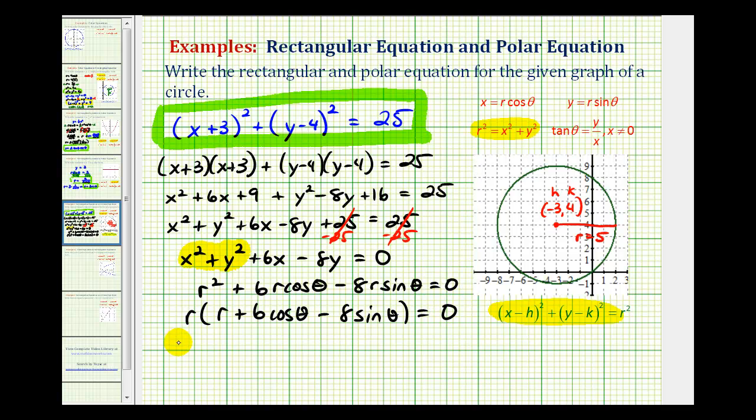The solutions to this equation occur when r is equal to zero or when r plus six cosine theta minus eight sine theta is equal to zero. So solving the second equation for r, we would have r equals eight sine theta minus six cosine theta.